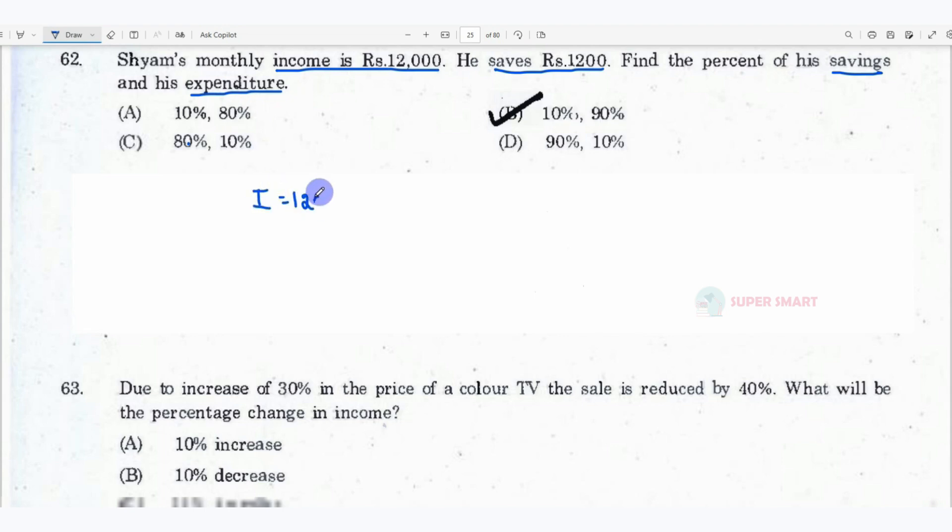The income is Rs 12,000. We can divide it by 100. The savings is Rs 1,200.